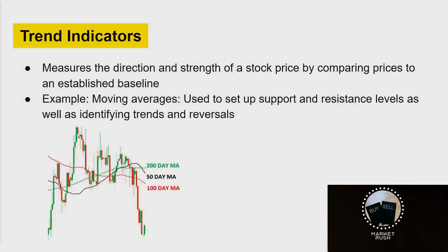Trend indicators basically measure the direction and strength of a stock price by comparing prices to an established baseline. An example of this is the moving average indicator, a very common one, which is used to set up support and resistance levels as well as identifying trends that might be happening in the stock.